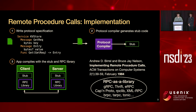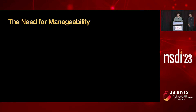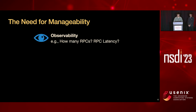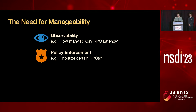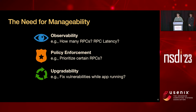There are a lot of problems in terms of manageability. The goal is to simplify a set of RPC manageability problems in real deployment, including several aspects. In terms of observability, for example, we want to learn how many RPCs there are and how long does each take. In terms of policy enforcement, as a network operator, can I rate-limit or prioritize certain RPCs? And in terms of upgradability, as a user of RPC libraries, can I upgrade my RPC library and fix some vulnerabilities while my app is still running?